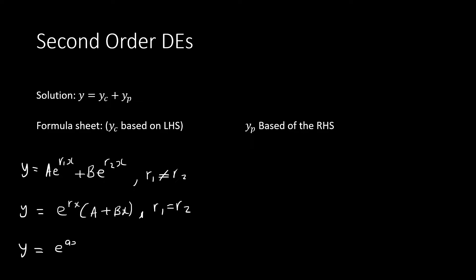The last formula is for complex numbers. You have e^(ax) times (a·cos(bx) plus b·sin(bx)). This is used if r equals a plus or minus bi as a complex number. Those are the only three formulas you have for yc.